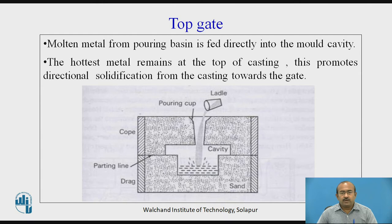Let us see the different types of gates one by one. Initially, the top gate — the figure shown on the screen is self-explanatory. The cope half, drag half, and parting line cavity are visible, along with sand and pouring cup ladles. Molten metal from the pouring basin is fed directly into the mold cavity. The hottest metal remains at the top of the casting, which promotes directional solidification from the casting towards the gate.